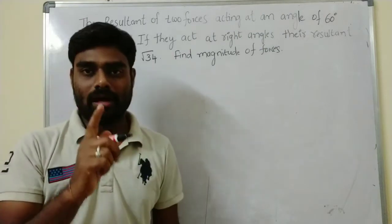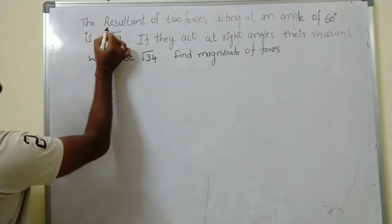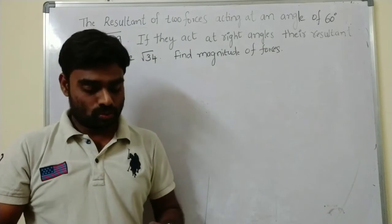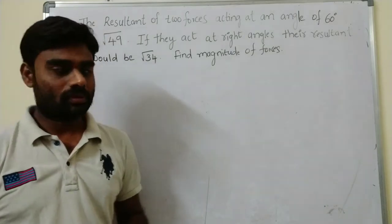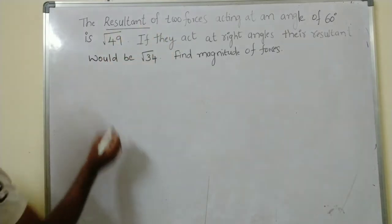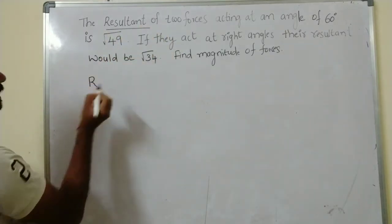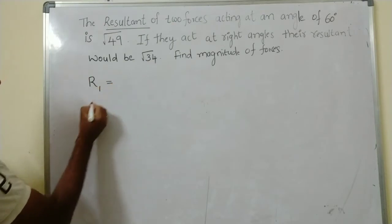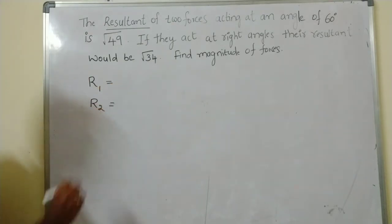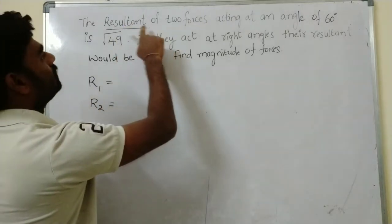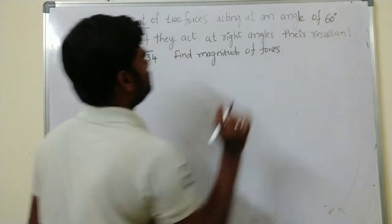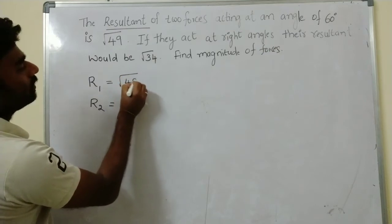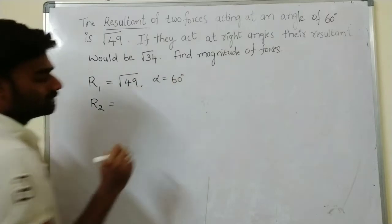This question is related to parallelogram law of forces. In this question, there are two resultant forces given and two angles given — that means alpha. Since two resultant forces are given, I'm taking R1 and R2. The resultant of two forces acting at an angle of 60° is √49, so R1 = √49 and alpha = 60°. This is case one.